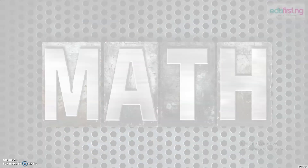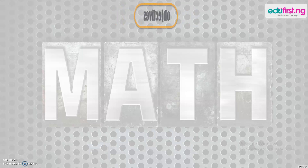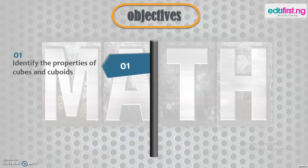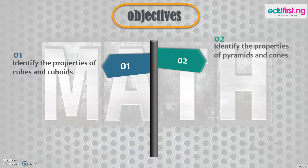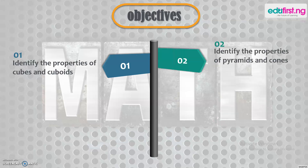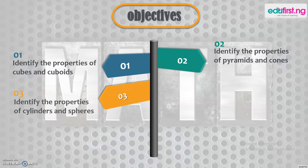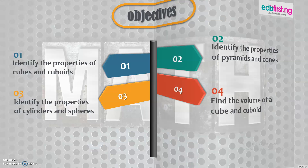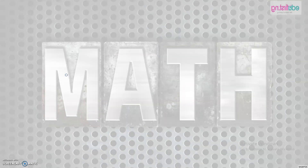Here's what you must learn by the end of this class. First, we must identify the properties of cubes and cuboids, identify the properties of pyramids and cones, identify the properties of cylinders and spheres, and lastly find the volume of a cube and cuboid. So follow me as we take a ride through this class.